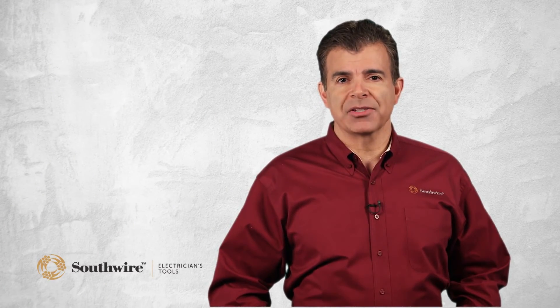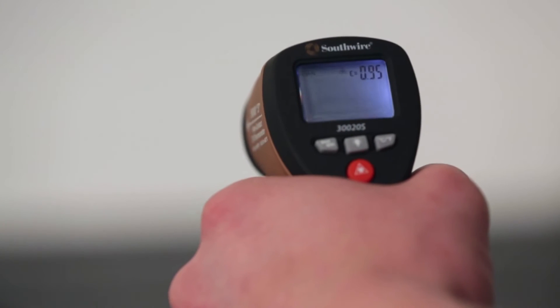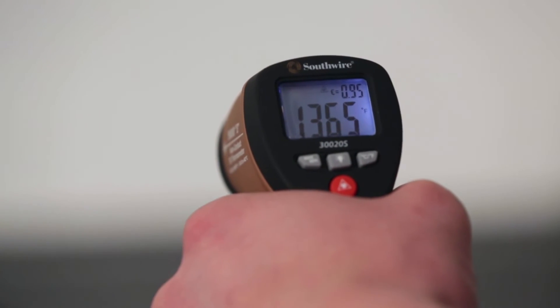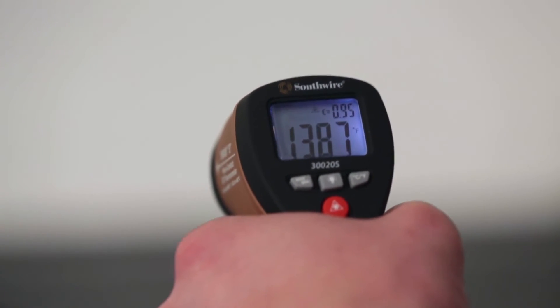Response rate is important when scanning an area for temperature spikes. Simply put, the faster the response rate, the more accurately the IR thermometer will show hot or cold spots.